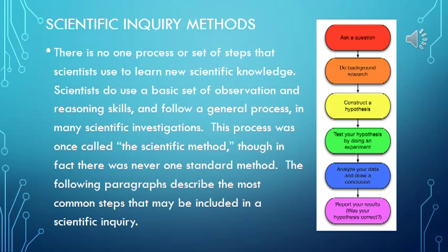There is no one process or set of steps that scientists use to learn new scientific knowledge. Scientists do use a basic set of observation and reasoning skills and follow a general process in many scientific investigations. This process was once called the scientific method, though in fact there never was one standard method. The following paragraphs describe the most common steps that may be included in a scientific inquiry.